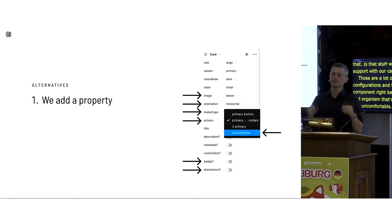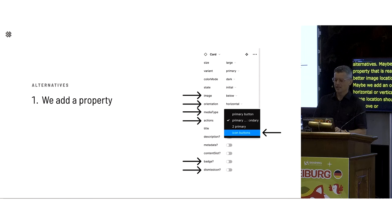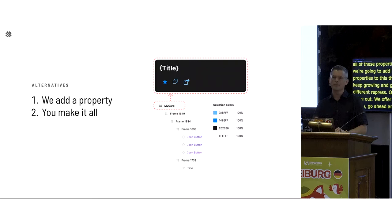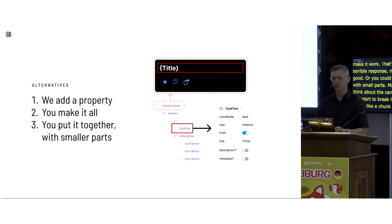But then more card requests come. People want to reverse the image and content order, add a label pill above the title, make it horizontal, or add an X to dismiss in the upper right. None of those options exist. Are they allowed? The answer too often is: no, those are all invalid cards, we don't have time, we'll put it in the backlog. Or the other extreme: just use hex values and raw frames — which is obviously terrible. The real answer may be to break the card into smaller composable parts.